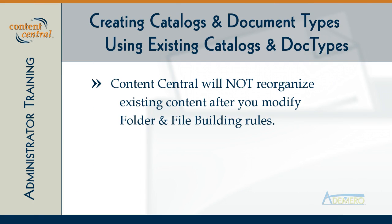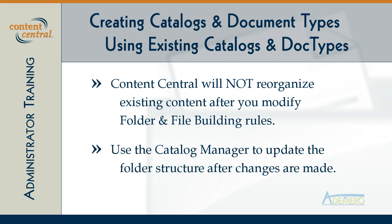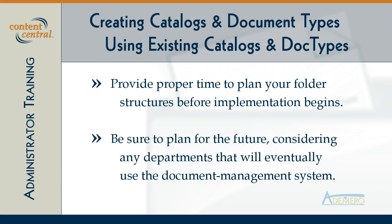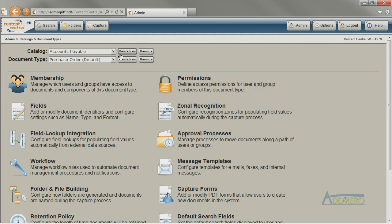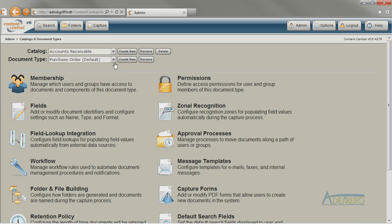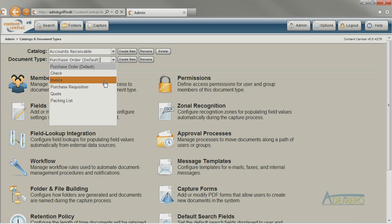It's important to keep in mind that when you change the folder building rules for a document type, Content Central will not automatically move all of the existing documents in the system to the new folder structure in Catalog Browser. So make sure to take some time up front to determine the best folder structure for your new document type — one that makes sense today, but also makes sense down the line when other departments want to add their folder structures as well. We just created a new document type by copying an existing document type and modifying its settings. We can create new catalogs the same way by copying an existing catalog.